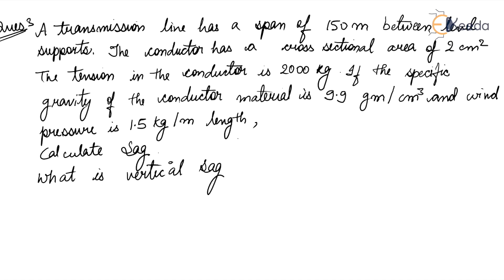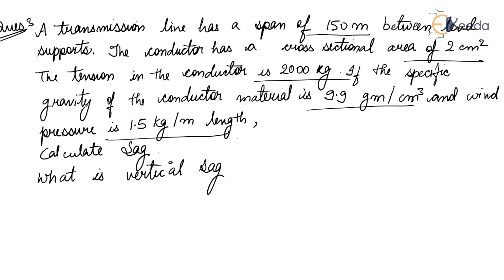The numerical is: a transmission line has a span of 150 meters between level supports, so L = 150 m. The conductor has a cross-sectional area of 2 cm². The tension in the conductor is 2000 kg. The specific gravity of the conductor material is 9.9 g/cm³ and wind pressure is 1.5 kg per meter length. We have to calculate the SAG and the vertical SAG.